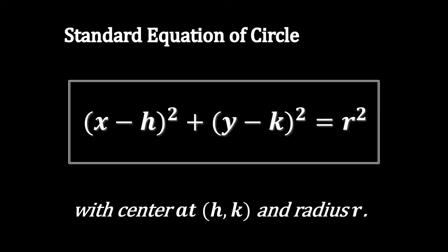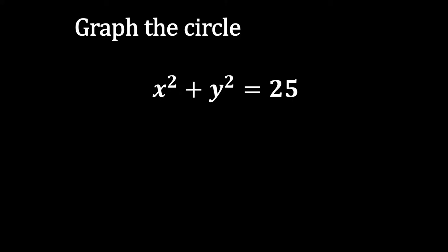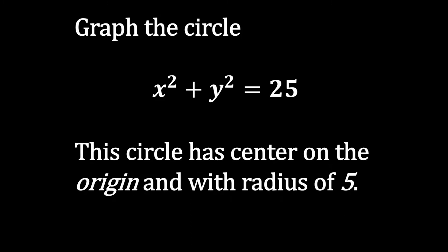In this lesson, you will need a compass and a graphing paper. Now let's try to graph the circle x² + y² = 25. This circle has center on the origin and with radius of 5.